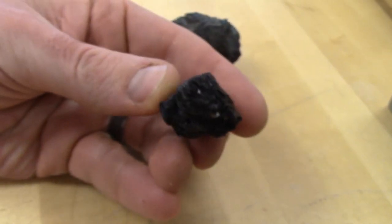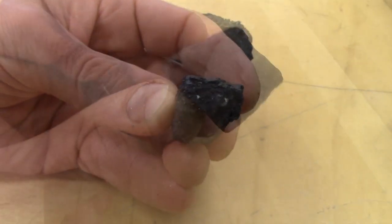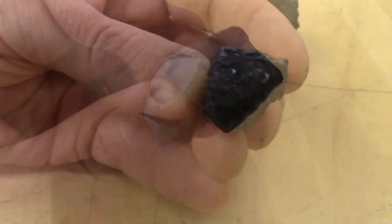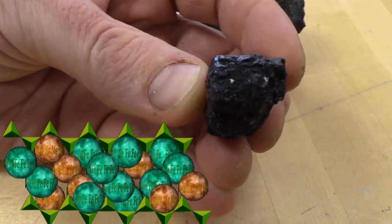Amphibole looks like pyroxene, except for this difference of cleavage angles, and that is controlled by their respective crystallography, single chain versus double chain.